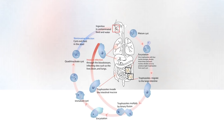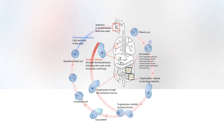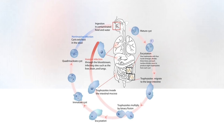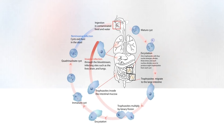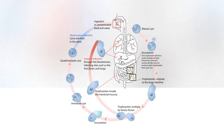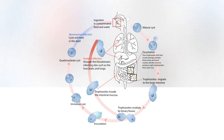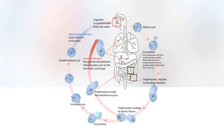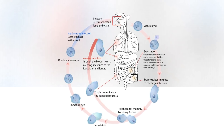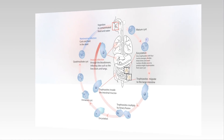The infection can occur when a person puts anything into their mouth that has touched the feces of a person who is infected with E. histolytica, swallows something such as water or food that is contaminated, or swallows cysts picked up from contaminated surfaces or fingers. Poor sanitary conditions are known to increase the risk of contracting amoebiasis E. histolytica.